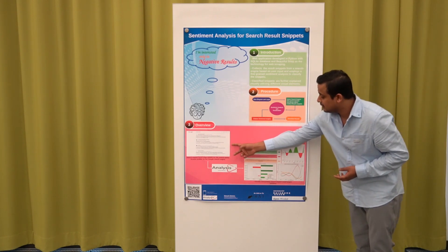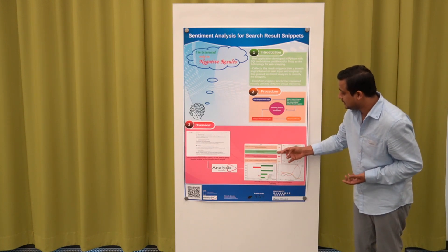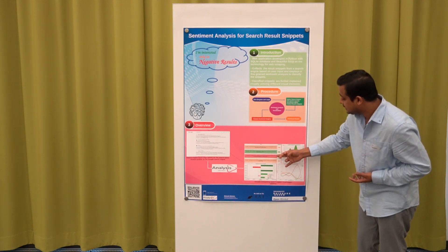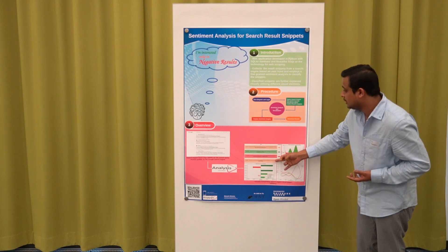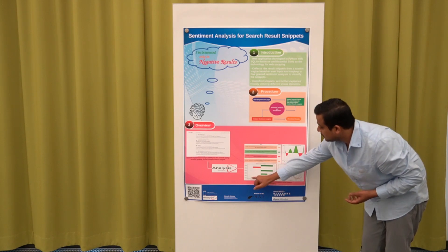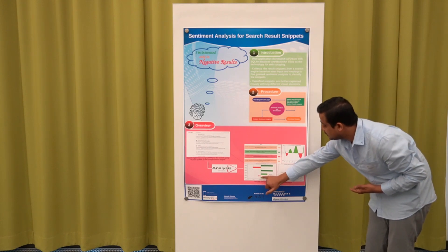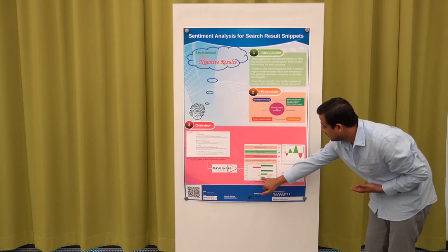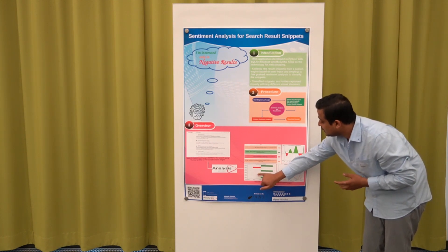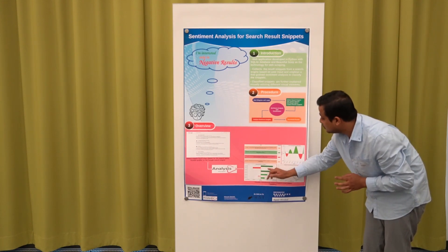Here are four queries, and we can see the sentiment tone for each. For example, the first one is neutral, the second is positive, the third is negative, and the fourth is also neutral. This is another visualization element showing the number of snippets and their sentiment tones. The first is slightly positive, the second is slightly negative, the third is a bit more positive, and the fourth is the most positive.